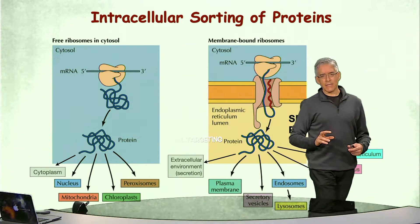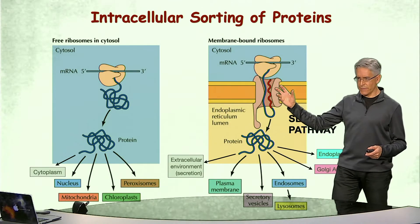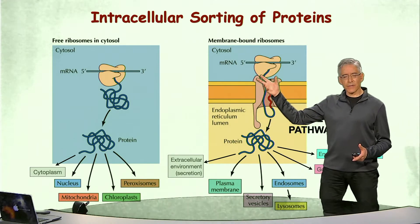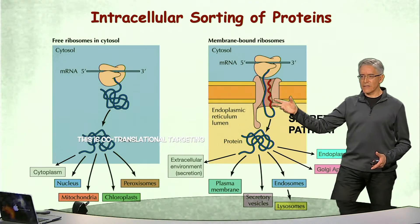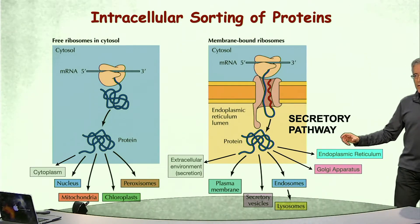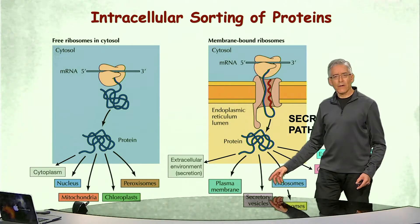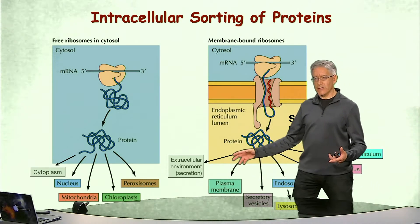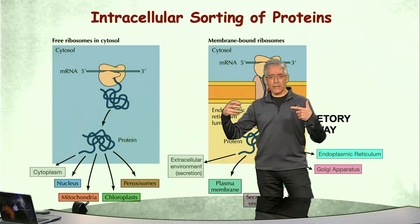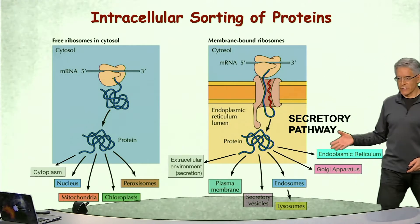The second path is followed by proteins synthesized in ribosomes associated to the membrane of the endoplasmic reticulum. Proteins synthesized this way are destined to go to the endoplasmic reticulum, Golgi apparatus, endosomes, lysosomes, secretory vesicles, the plasma membrane, or to be secreted out of the cell — which is what gives this pathway its name: the secretory pathway.